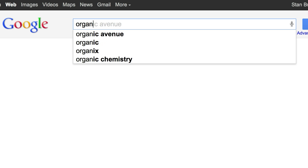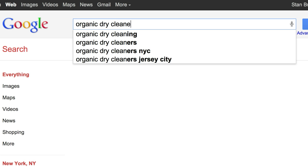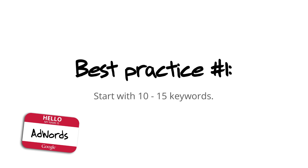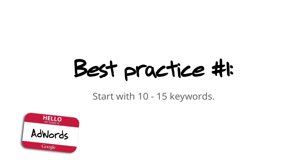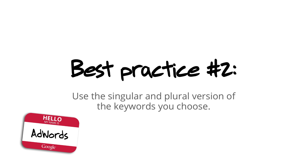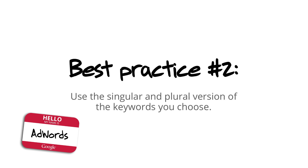The more descriptive you are in your keyword list, the more chance that somebody is going to search for your keyword, see your ad, and find it relevant to what they're looking for. A best practice when creating your keywords is to start with a keyword list of about 10 to 15. There's really no need to put in any more keywords because if your keywords are relevant enough to the ad, they'll do the work for you. It's also a best practice to include the singular version of a word as well as the plural version, because the system treats those as very separate keywords.